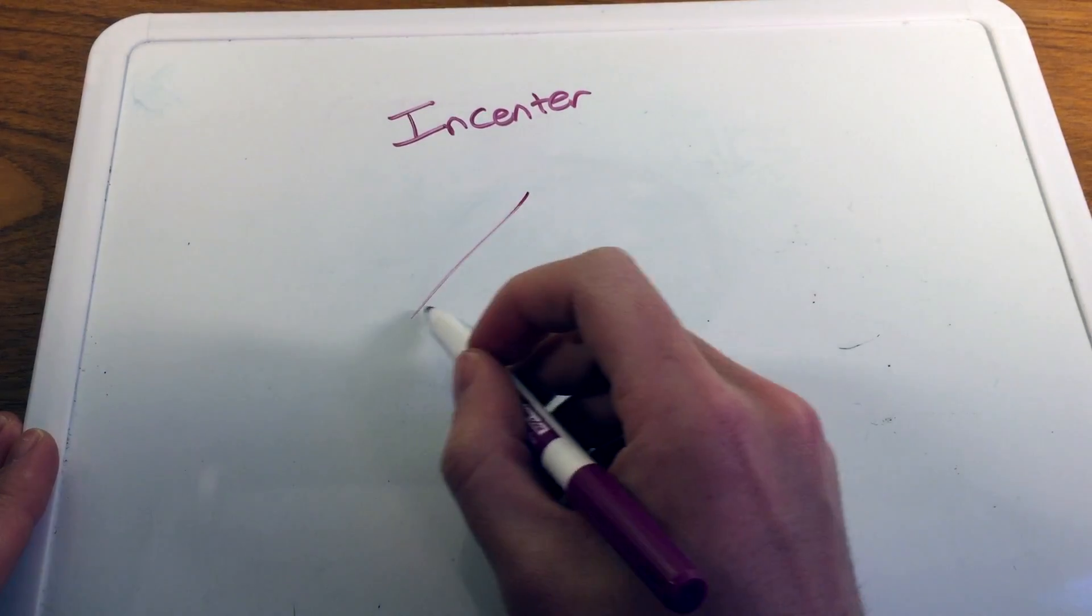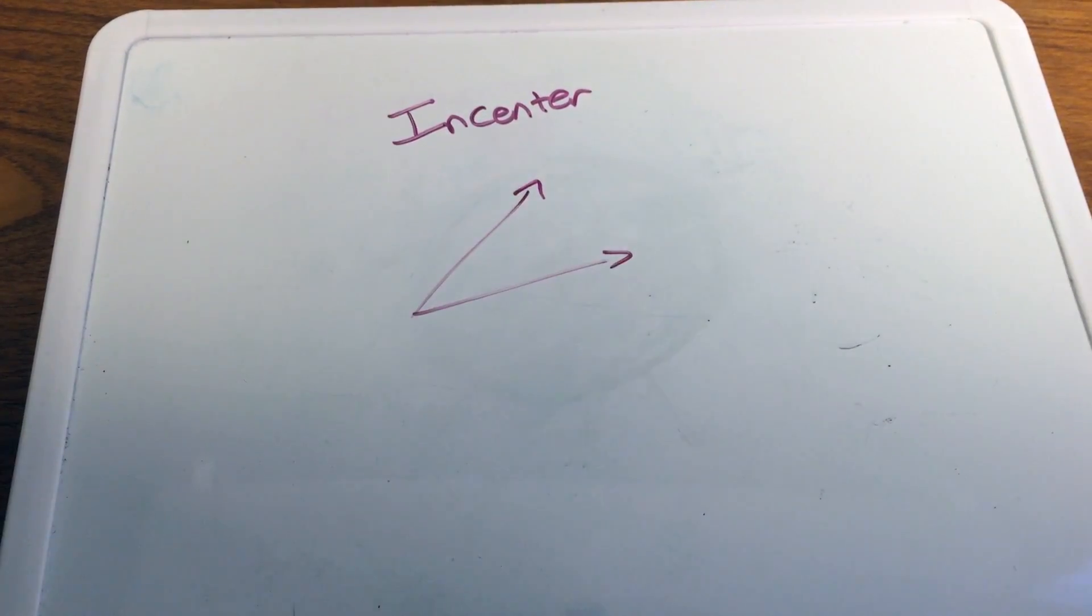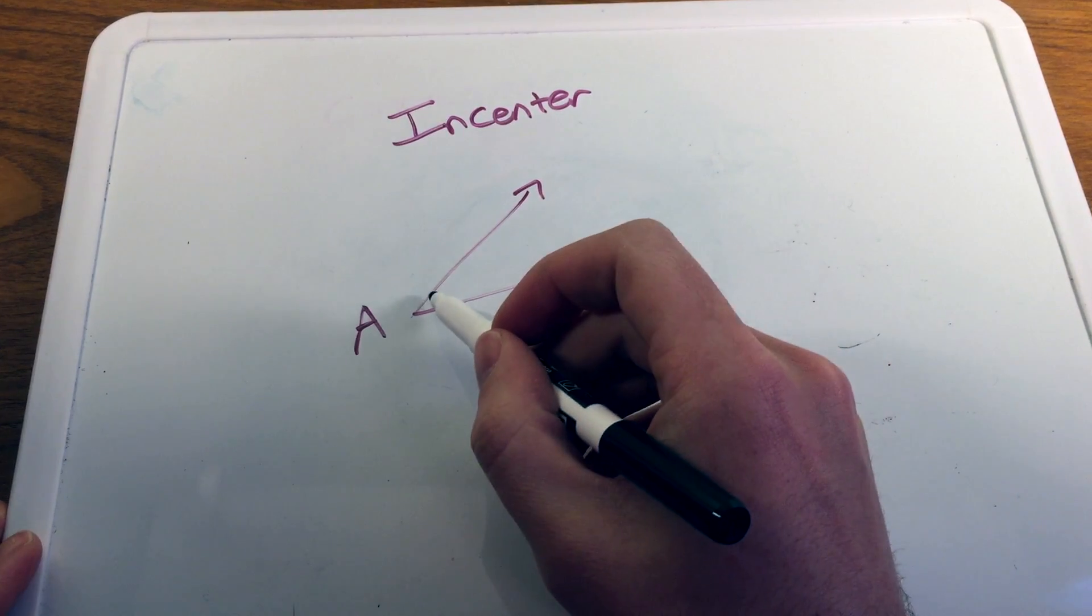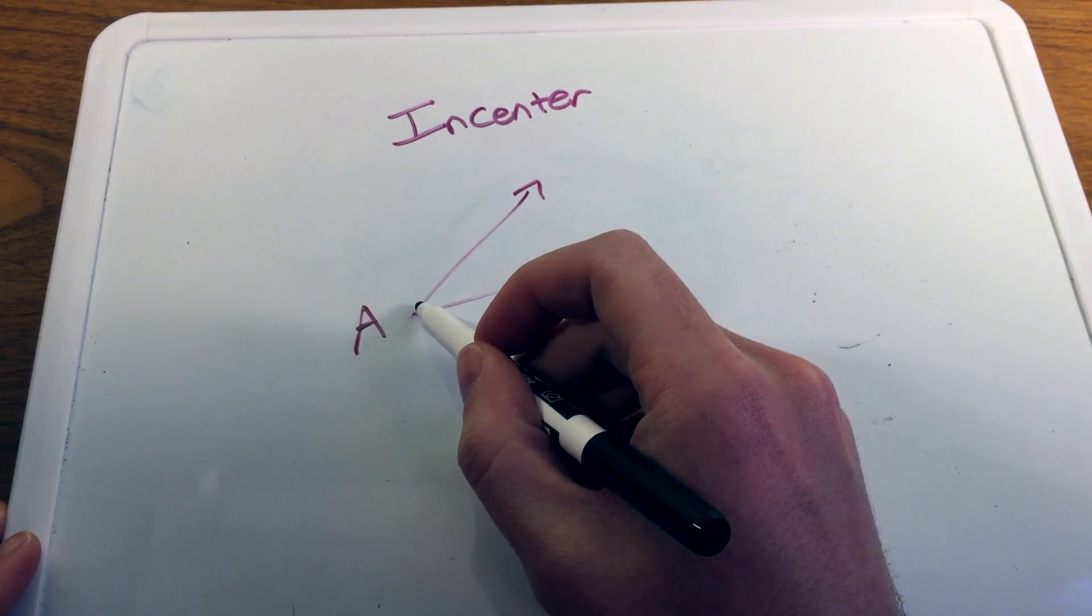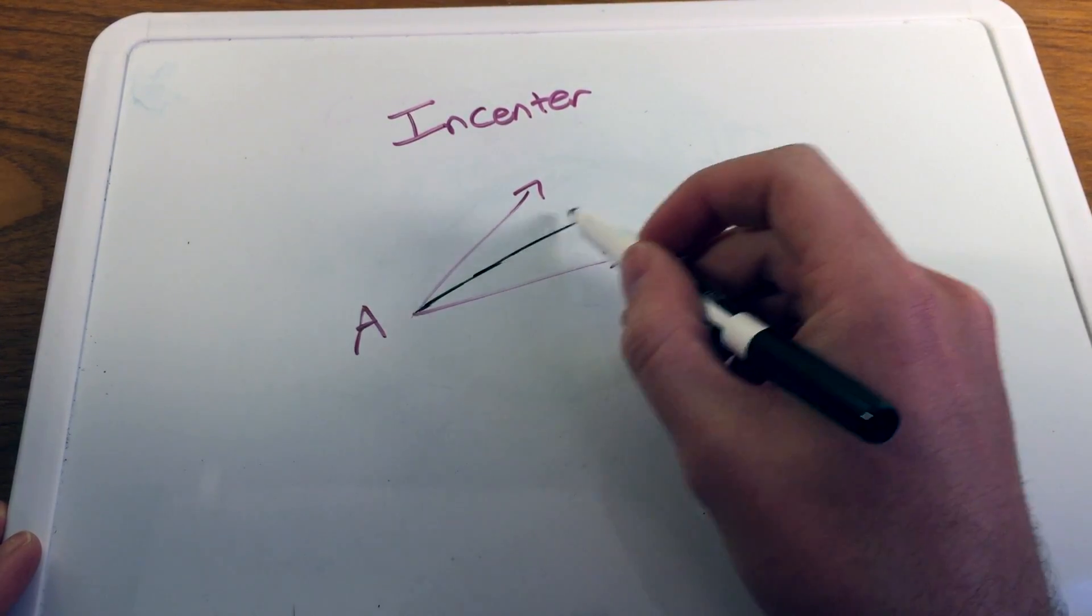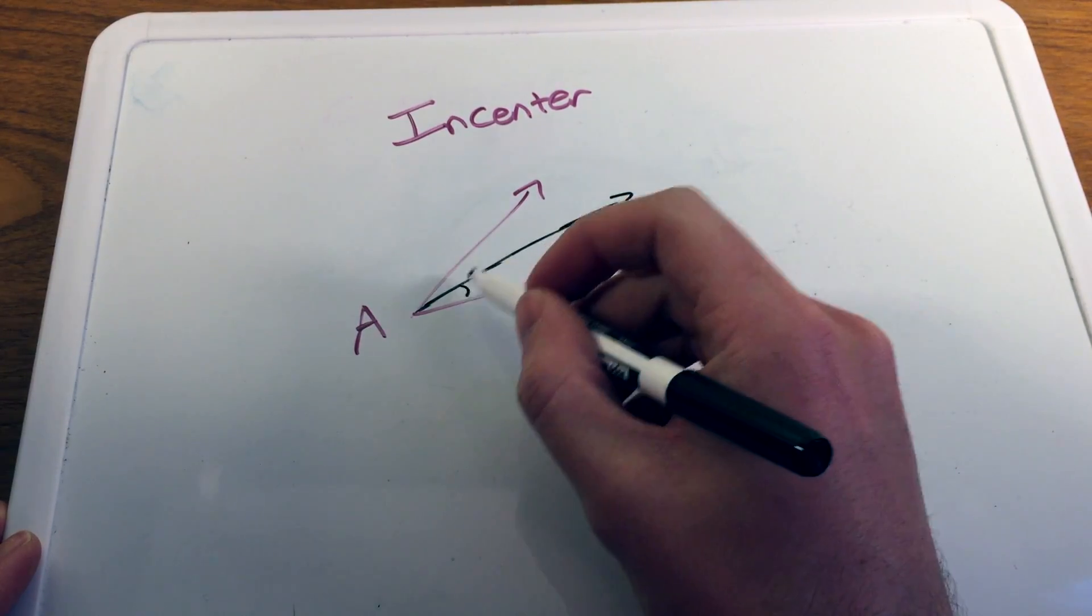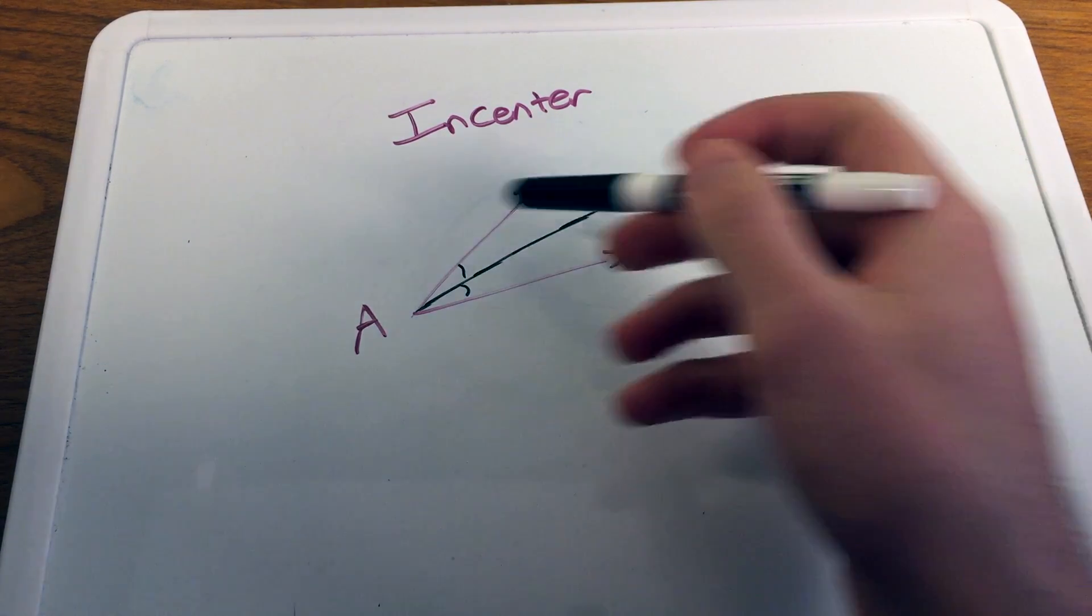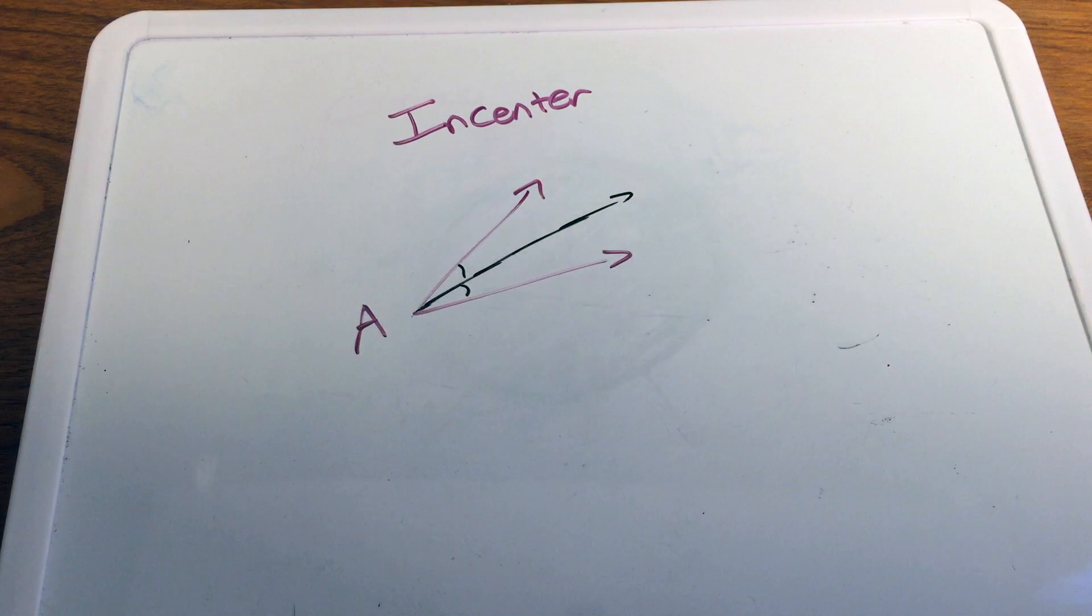So what is an angle bisector? Well, if I just have an angle here, an angle bisector is where we take a ray, segment, pretty much whatever, but usually it's a ray by the definitions, and this ray bisects this angle, meaning it cuts it directly in half into two congruent angles. And so that would be the angle bisector of this angle A here, and so we're going to find the three angle bisectors of a triangle.